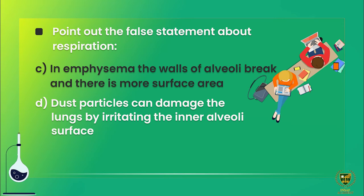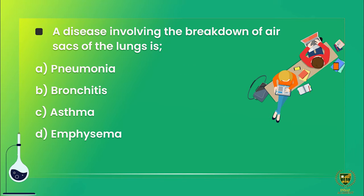Option D says dust particles can damage the lungs by irritating the inner alveoli surface — that is correct. Moving to the next MCQ: a disease involving the breakdown of air sacs of lungs — wohi kaun si bimari hai jis mein air sacs ka breakdown shuru ho jata hai?